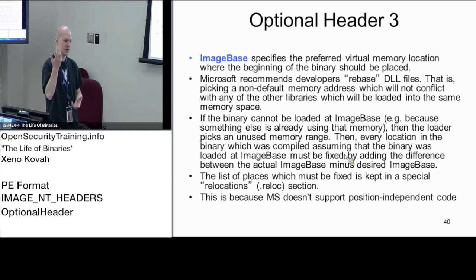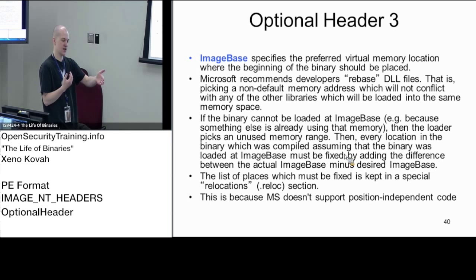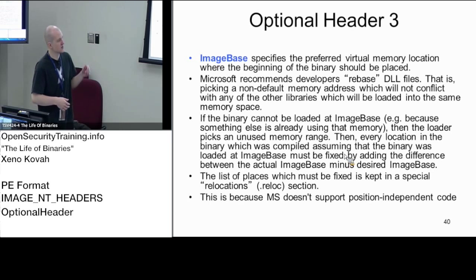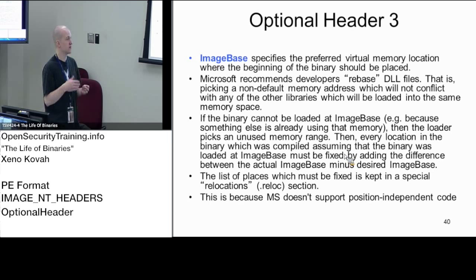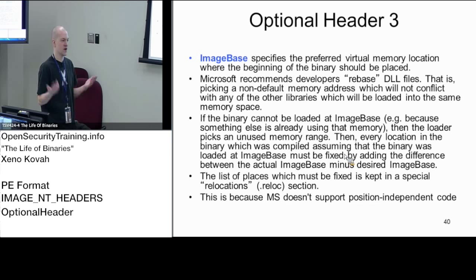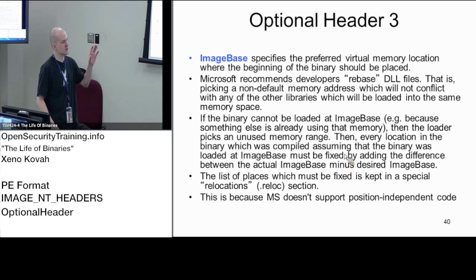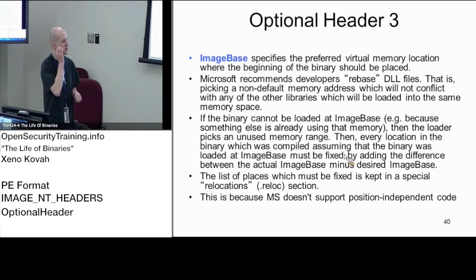If you don't rebase things, the linker gives everyone some default address — like hex 400000 or hex 10000000. Third-party stuff that hasn't been rebased will always have the compiler's default address. On a non-ASLR system like XP, the EXE loads and says 'I'd like to be at image base hex 100000.' The OS says sure, and then it looks for all the DLLs, each requesting their preferred address. If it's free, it loads them there.